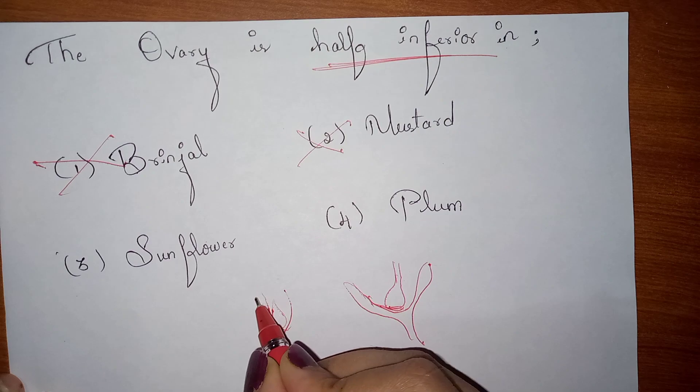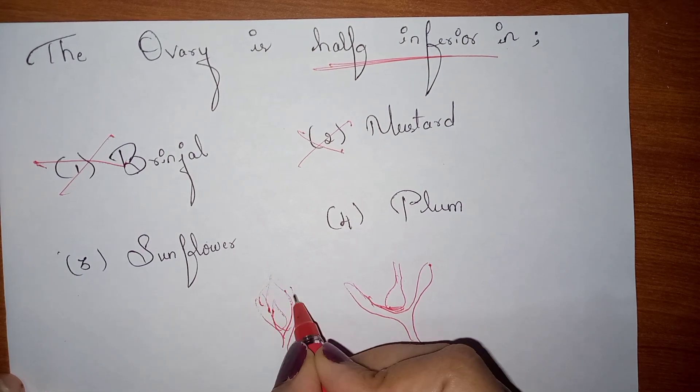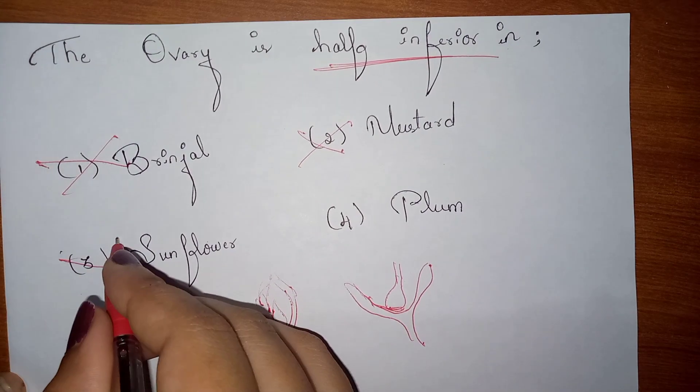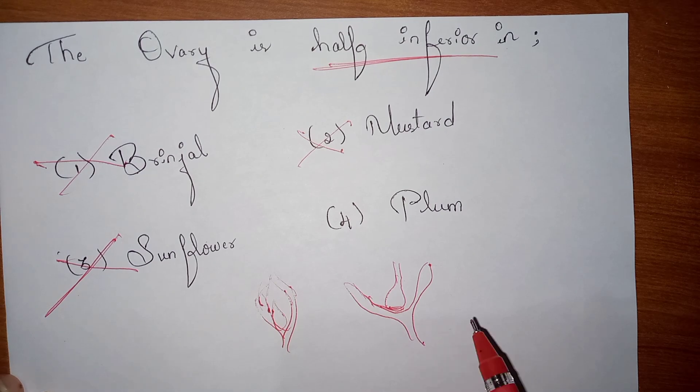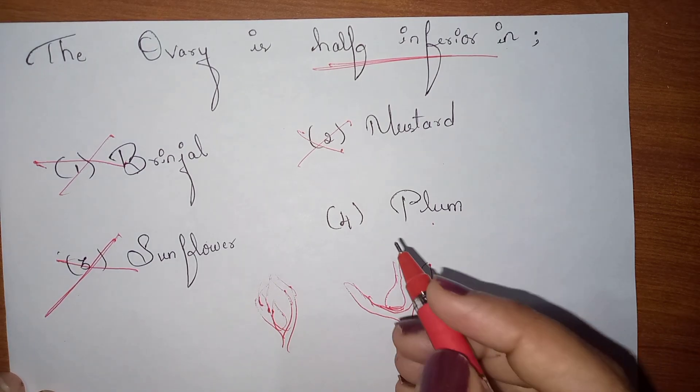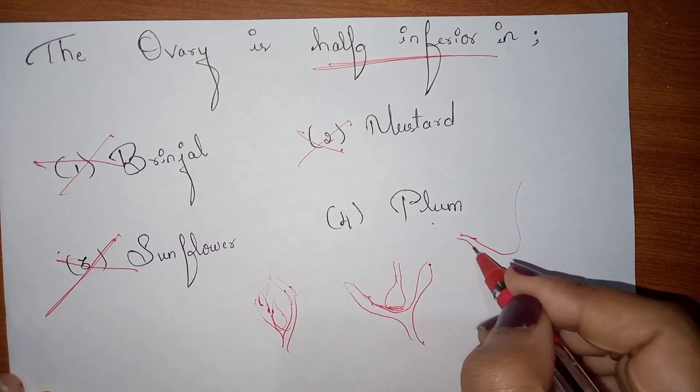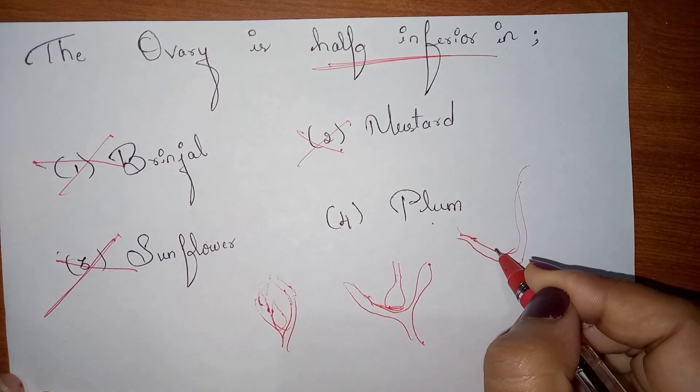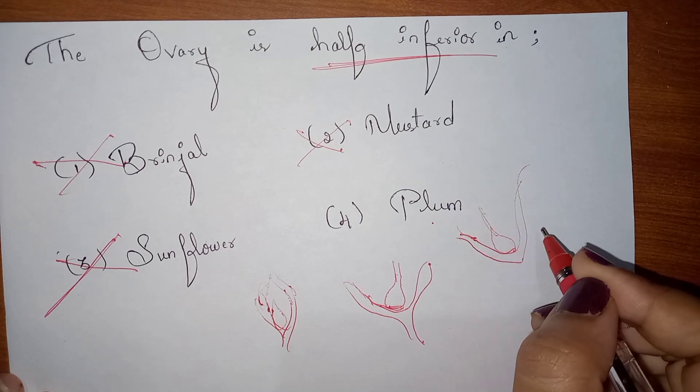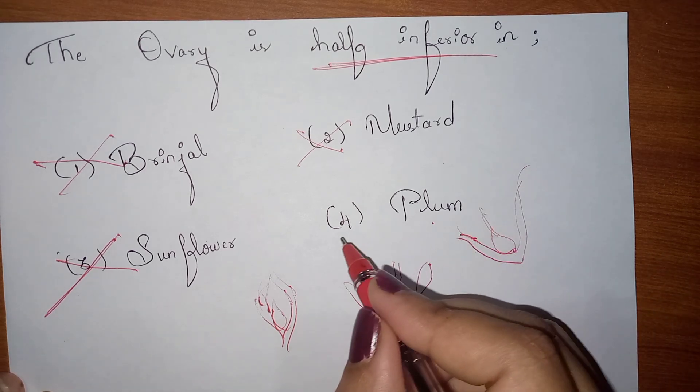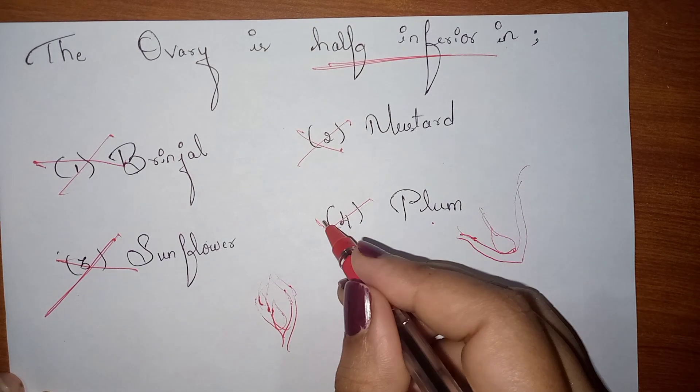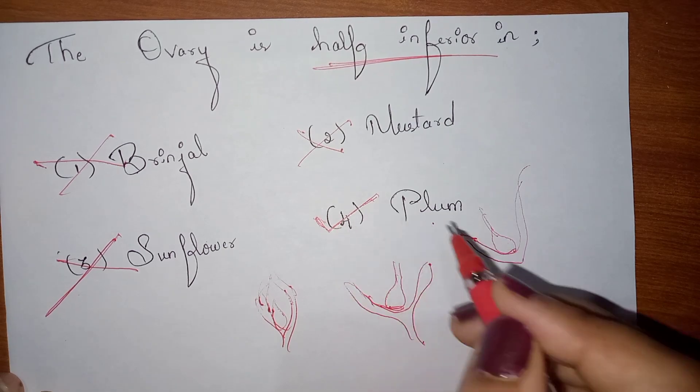So it is an inferior ovary, so Sunflower is not our answer. So Plum. In Plum, the thalamus will form a cup-like structure and the ovary will be here. That is half inferior or half superior. That is the answer. Plum is the correct answer. Plum has half inferior or half superior ovary.